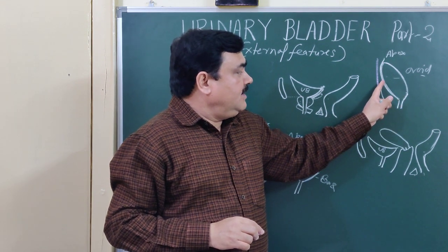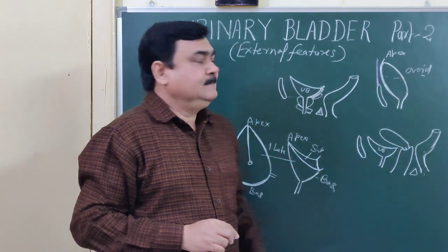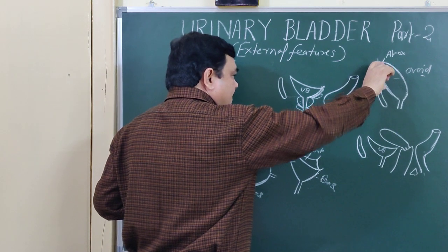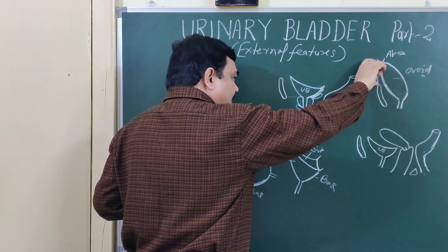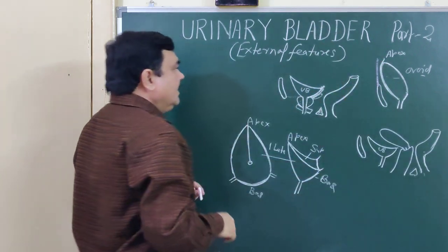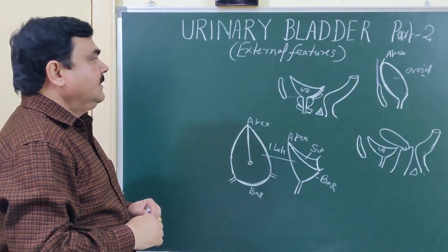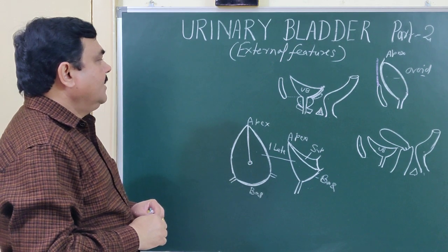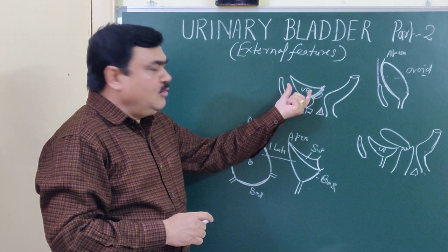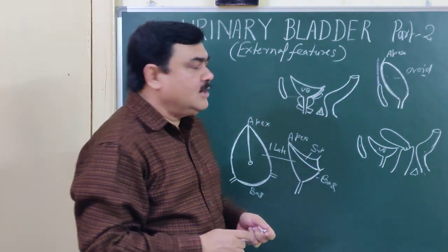The other surface is the posterior superior surface. So the full bladder has: apex, base, anterior inferior surface, and posterior superior surface. The anterior inferior surface is related to the anterior abdominal wall. This concludes the external features of the urinary bladder in the empty and full states. This is part 2, thank you.